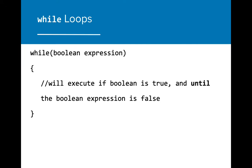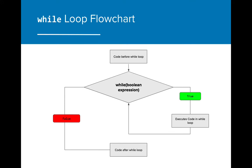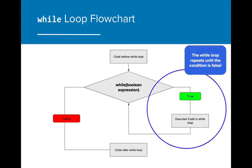Similarly to if statements, while loops evaluate a boolean expression. If the expression evaluates to true, then the code in the curly brackets will execute. If the expression evaluates to false, then the while loop will be skipped over. The main difference is that once the code within the while loop is executed, the program returns to the boolean expression to re-evaluate the condition. If the expression is still true after a run through the while loop, the while loop will run again. If it becomes false as a result of the code executed in the while loop, then the while loop will stop. This is a look at the while loop flowchart. The while loop will repeat itself until the condition is false. Only once the condition is false will any code that follows be executed.